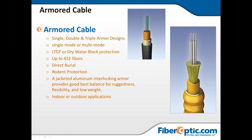Here's an example of armored outdoor cable. You can have single, double, or triple armor designs — an external armor layer on the outside and possibly another layer on the inside. These are generally used for aerial lashing, direct burial underground, or lashing to a cell tower. Armored cable also provides rodent protection — it'll take a long time for them to chew through it. They also typically include dry water-block protection or gel filling to keep water from ingress.